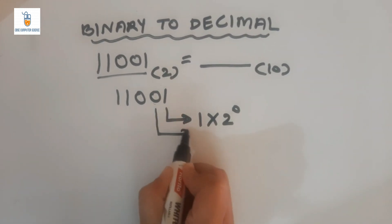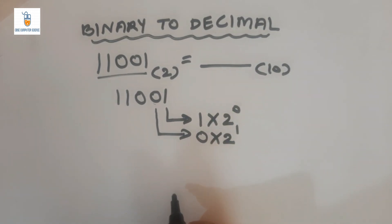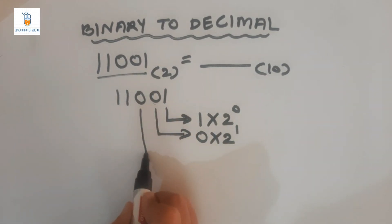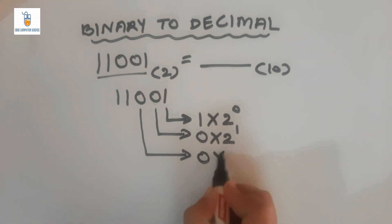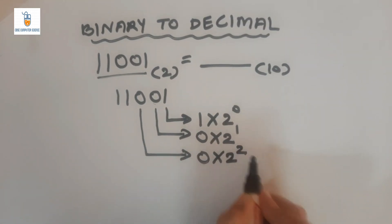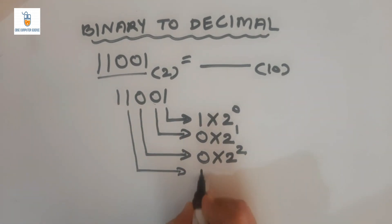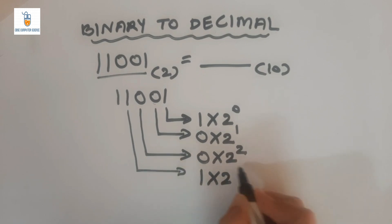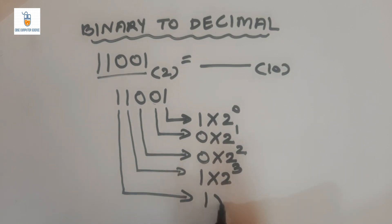The rightmost digit is 1, so its weight would be 2 raised to 0, and we multiply the weight by the given digit. The second digit is 0, so we write 0 into 2 raised to 1. The third digit is again 0, so we write 0 into 2 raised to 2. The fourth digit is 1, so we take 1 into 2 raised to 3, and the next digit is again 1, so we take 1 into 2 raised to 4.